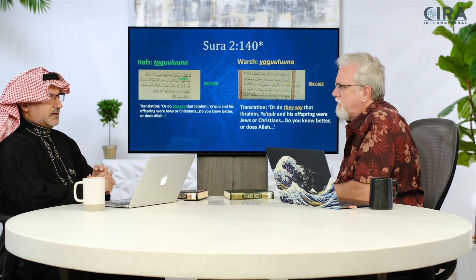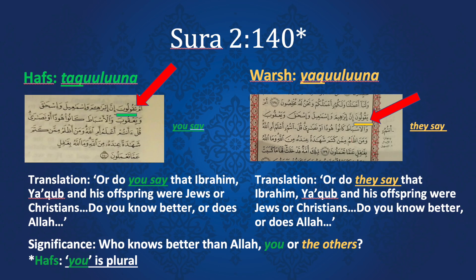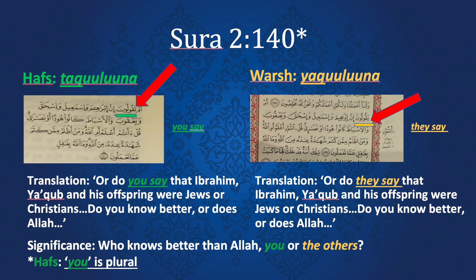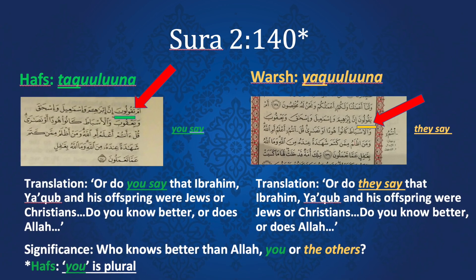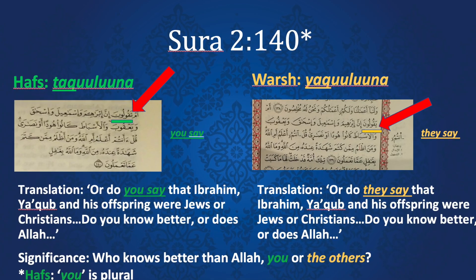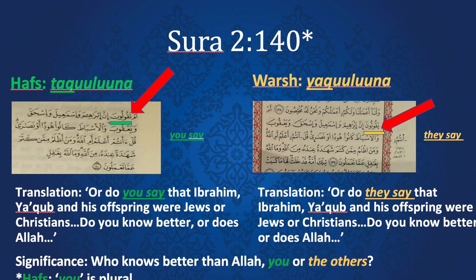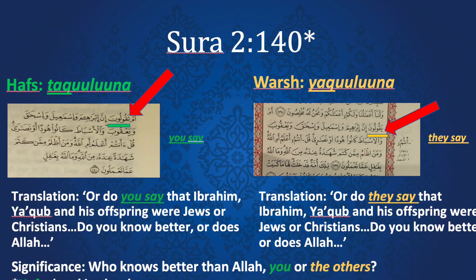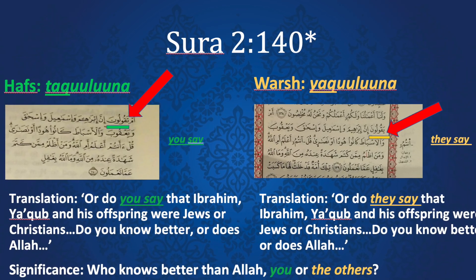The Arabic of Hafs reads 'Taquluna' — and it's really a question, 'Am taquluna?' meaning 'Do you say' or 'Are you saying this?' So Allah is speaking to somebody right now, asking: are you claiming this about Abraham, about Ishmael, about Isaac, about Jacob and the 12 tribes, that they were either Jews or Christians? Versus Warsh, which reads 'Am yaquluna?' — not 'taquluna' but 'yaquluna,' meaning someone else is saying this.